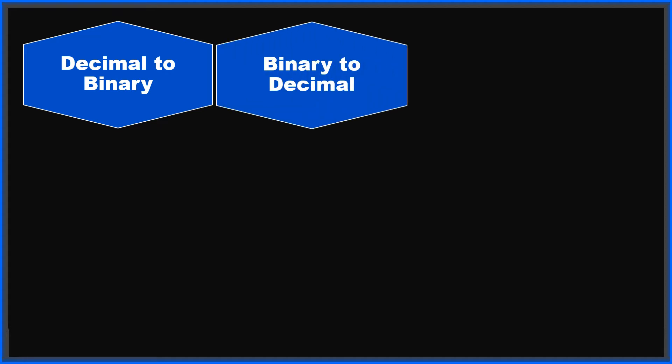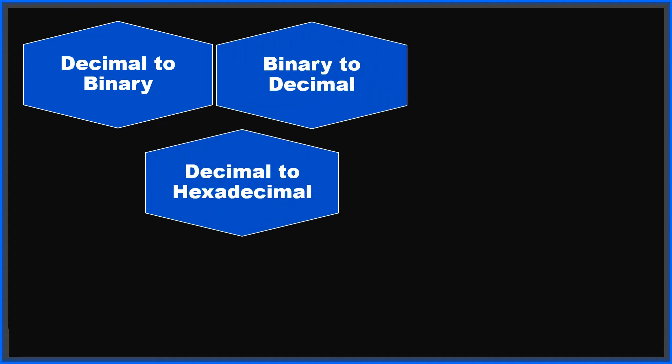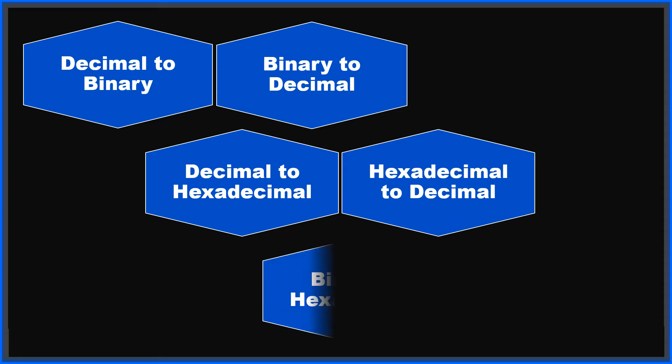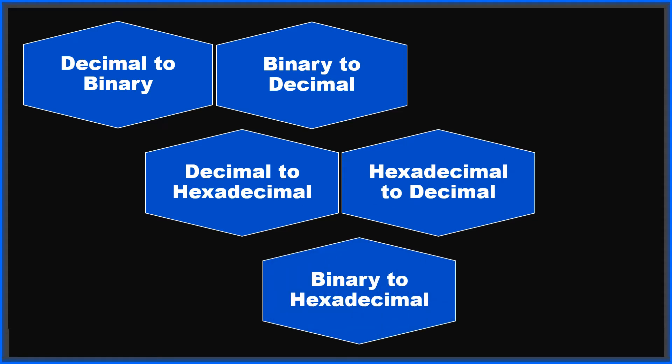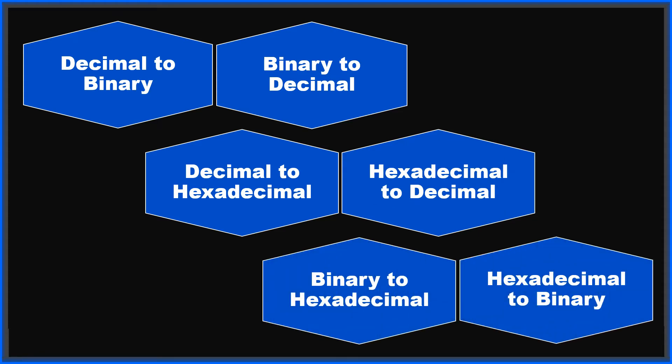We will learn six conversions: decimal to binary and vice versa, binary to decimal, decimal to hexa, hexa to decimal, binary to hexa, and hexa to binary. These are the total six conversions that we would learn.